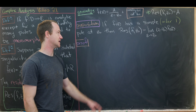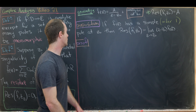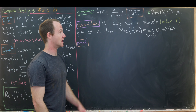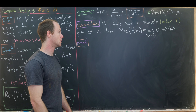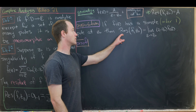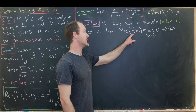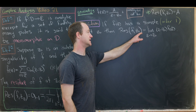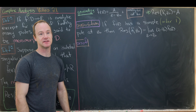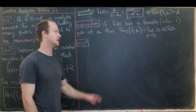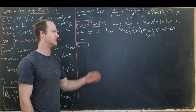If f has a simple pole — that is, an order-one pole — at z₀, then the residue of f at z₀ is equal to the limit as z approaches z₀ of (z − z₀) · f(z).